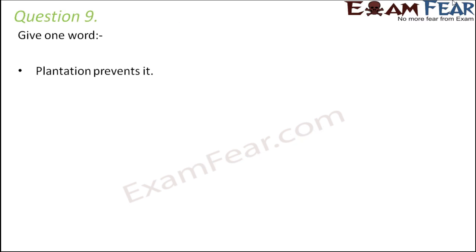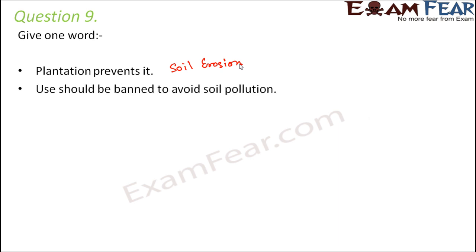Question number 9. Give one word for each of them. Plantation prevents it — plantation means planting more trees. If we plant more trees, soil erosion is prevented because their roots will firmly hold the soil and it will not get washed away by water.